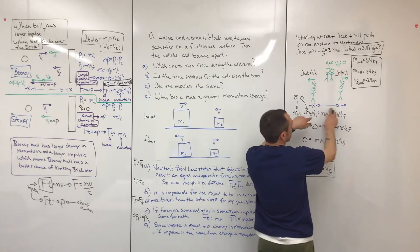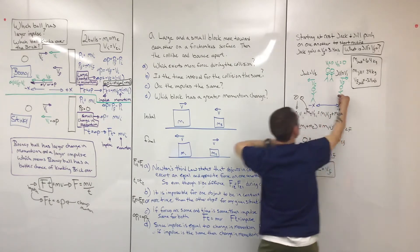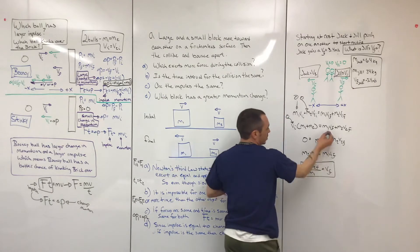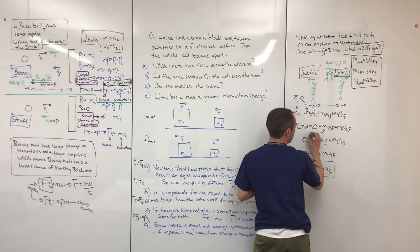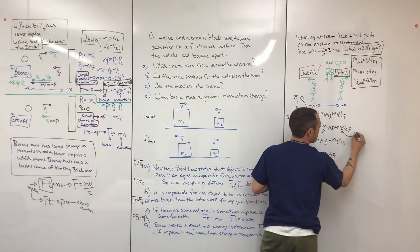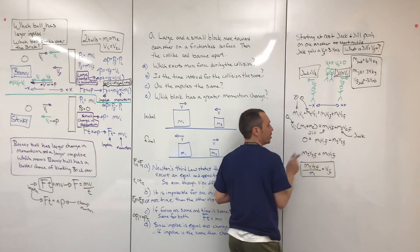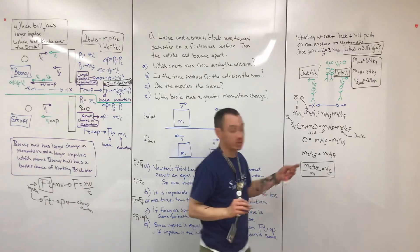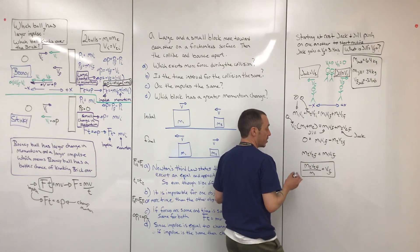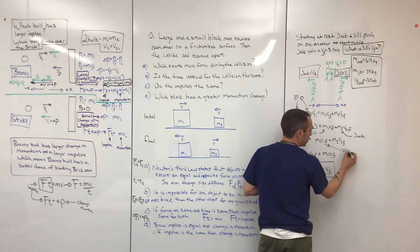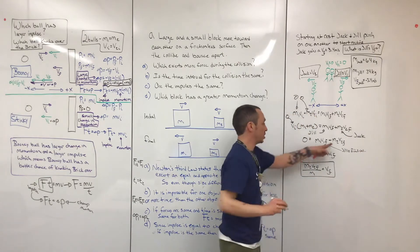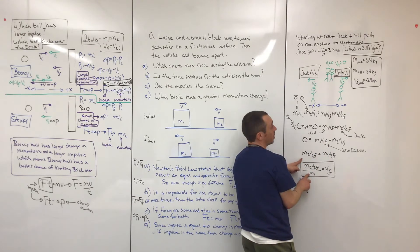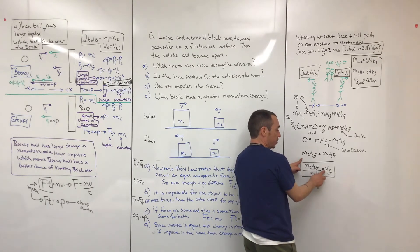Jill moves in the positive x direction, and Jack moves in the negative x direction after the push. We've associated Jack with v2 and Jill with v1. Since Jack is moving in the negative x direction, his momentum picks up a negative sign. The right side equals zero. We then bring Jack's momentum over and divide by Jill's mass m1, and we get Jill's final velocity. It's that simple.